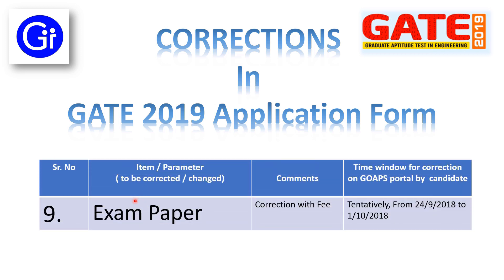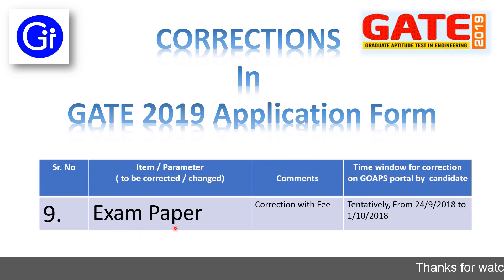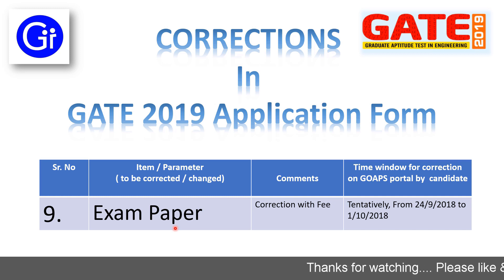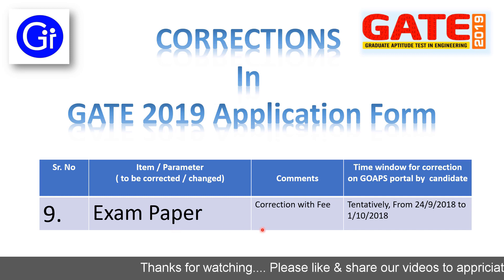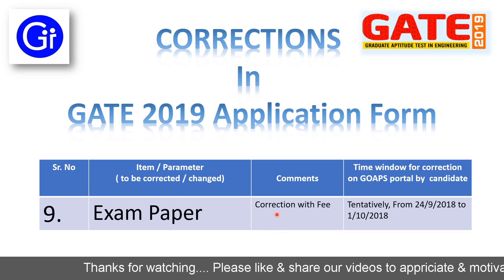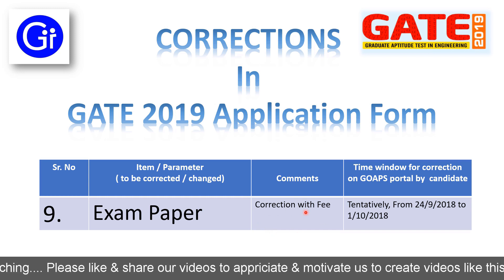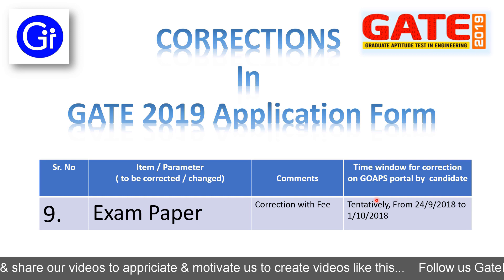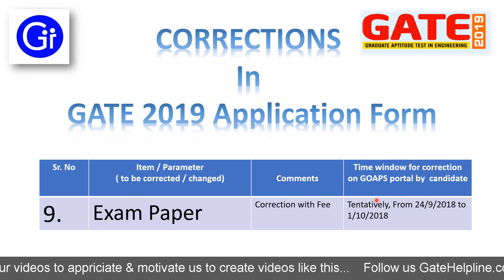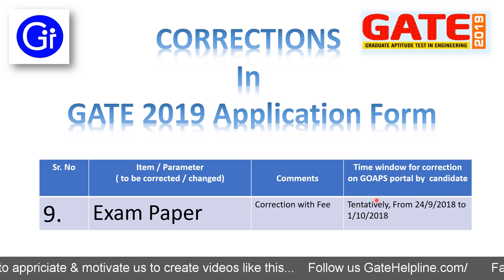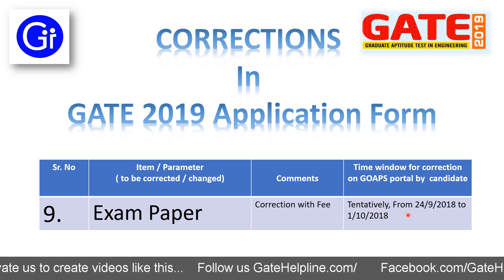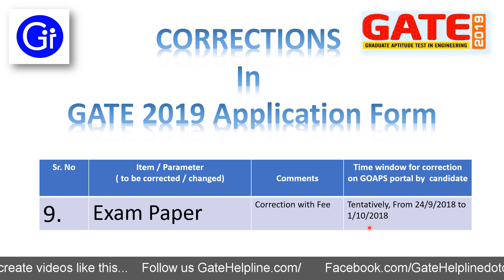The 9th parameter to be corrected or changed is exam paper — the exam paper is like CS, EE, CE, etc. This can be done by paying some amount of fee, and the fee will be communicated later. The time window for correction on the GOPS portal by the candidate will be tentatively from 24th September to 1st October.